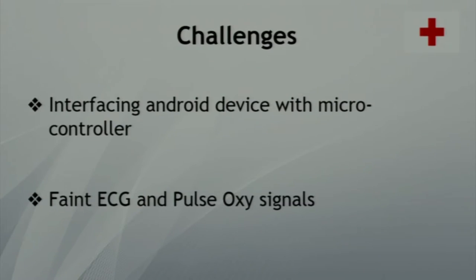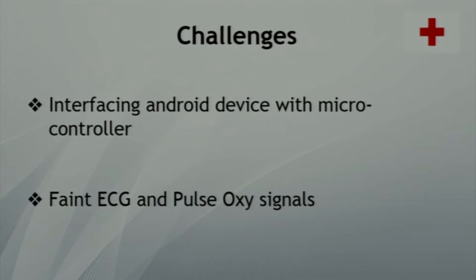Now Diganta will talk about the challenges. The first challenge was interfacing the Android device with the STM32. We had two options — USB and Bluetooth — and chose Bluetooth because we intend to make this a wearable device, for ease of access and use. The second challenge was measuring ECG and pulse oxy signals. These signals are very faint, and it was difficult to extract the signal accurately because we were implementing the circuit on a breadboard, which introduced a lot of noise.